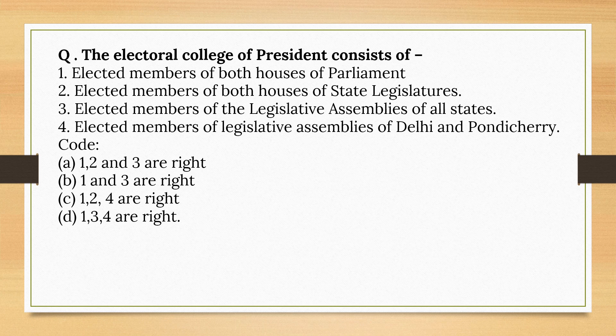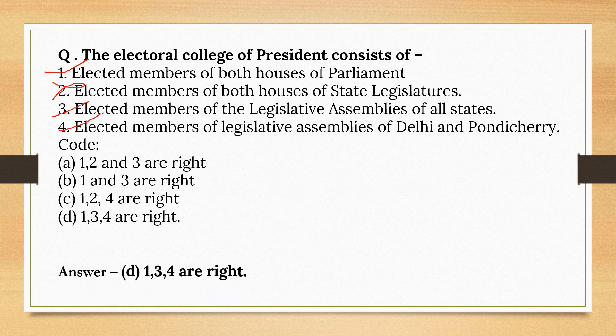The Electoral College of the President consists of: elected members of both houses of Parliament — correct; elected members of the Legislative Assemblies of all states — correct; elected members of Legislative Assemblies of Delhi and Puducherry — correct. Note: elected members of both houses of State Legislature is not fully correct — it excludes Legislative Council members. So the correct option is Option D.